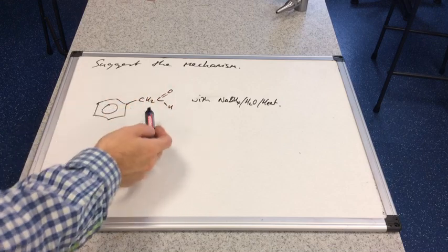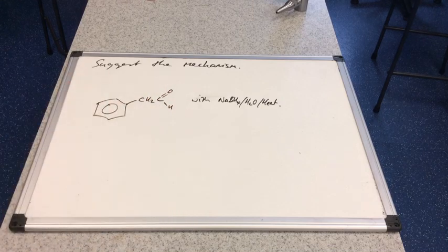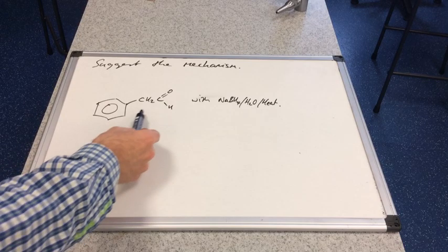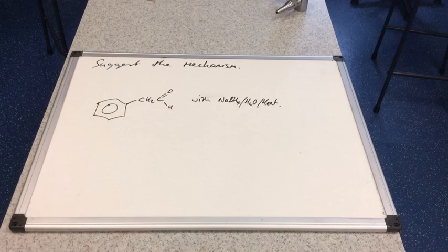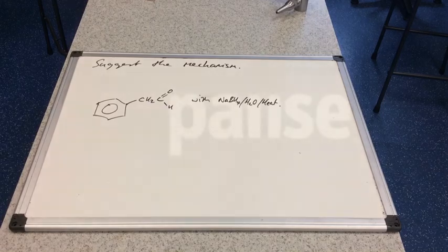Nucleophilic addition. So we'll finish with just a more complex starting compound. So we've got an aldehyde now. So we'll just suggest the mechanism. So we're reacting this aldehyde with NaBH4 in water with heat. So if you want to pause the video, have a go and then we'll go through the answer.